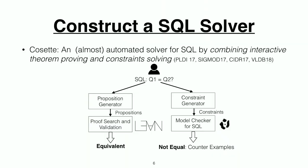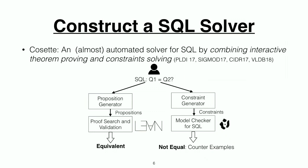For a given pair of SQL queries, we do two things. First, we compile the SQL queries to propositions that can be checked by the interactive theorem prover and develop an automated proof generation procedure to find mechanized proofs of equivalence. Second, we compile the SQL queries to a constraint solver and build a model checker to find counterexamples proving the queries inequivalent. Let me show you a demo. This tool checks equivalence of SQL queries: you specify a schema, specify tables, and write two SQL queries.